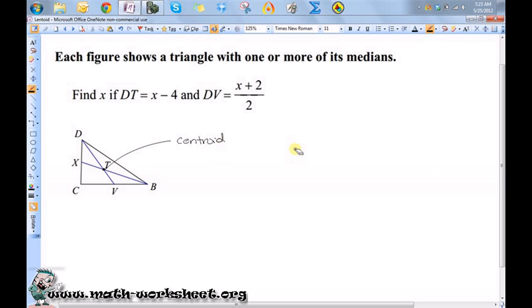So I'm trying to find the value of x when I know that DT, which is this segment here, and DV, which is the length of this median here, are represented by these two expressions. The way I'm going to start this is I know that DT plus TV equals the length of the entire median, DV.